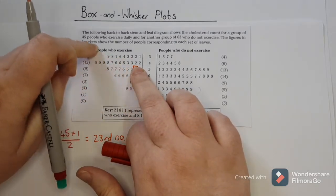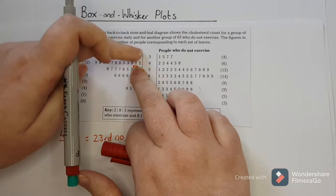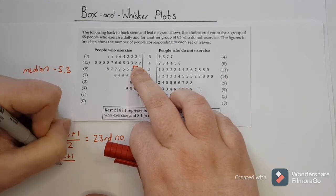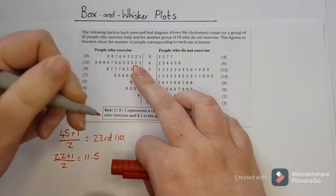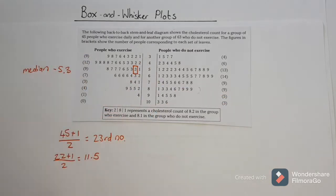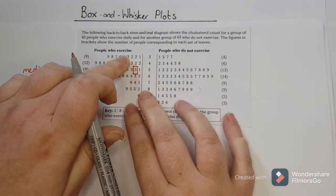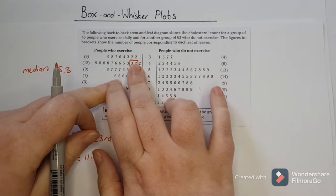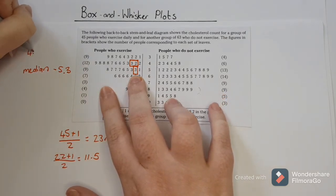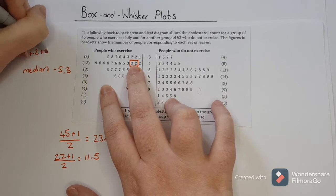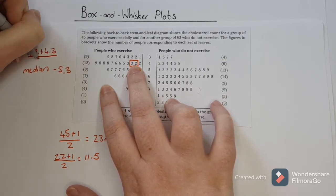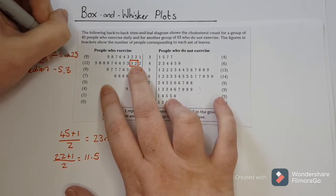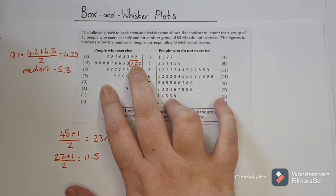So now I'm looking at just the numbers beforehand, and I have 22 numbers there. So 22 plus 1 divided by 2 means it's 11.5, so I want the number between the 11th and 12th number. If I count all the way through, I find the 11th and 12th numbers, and I want 4.2 plus 4.3 divided by 2, which gives me 4.25 — that is then my lower quartile.